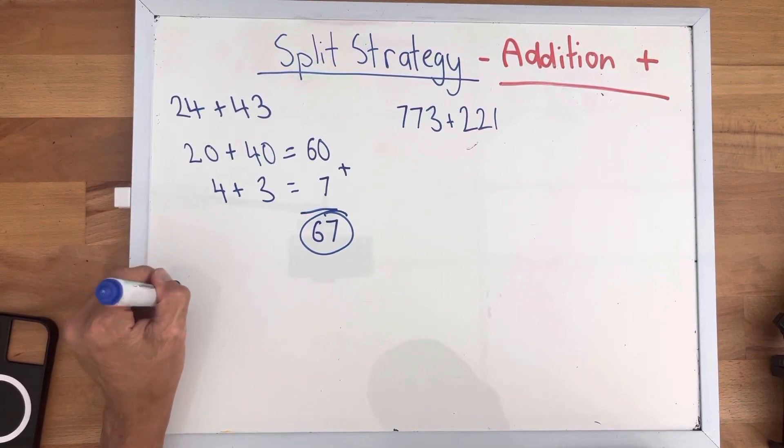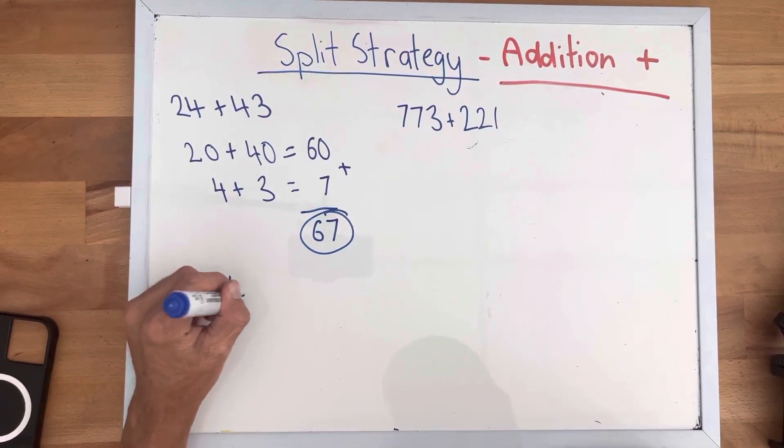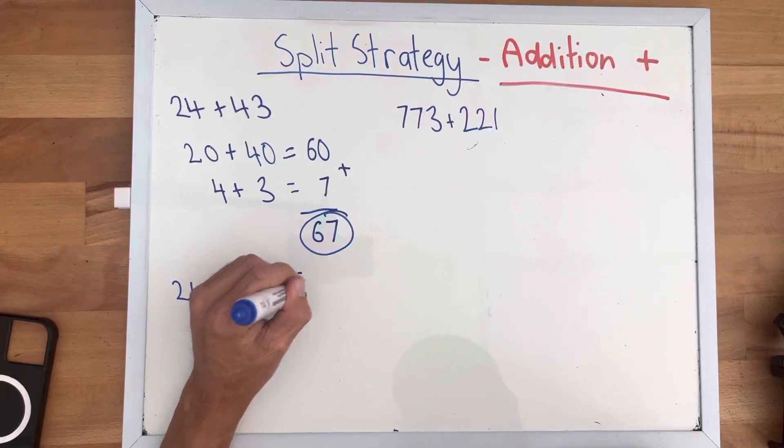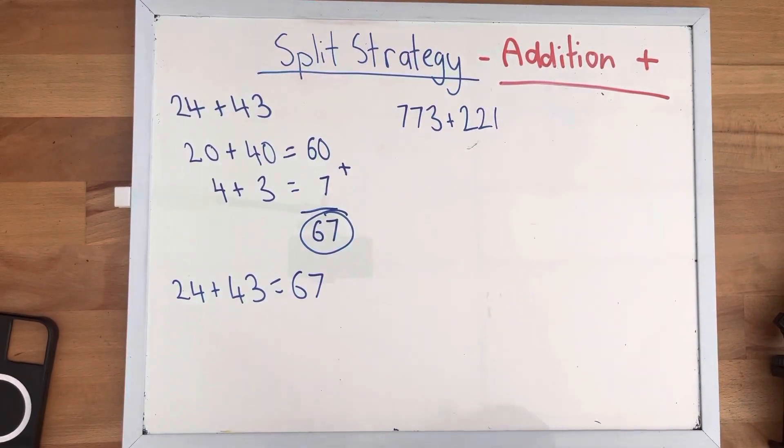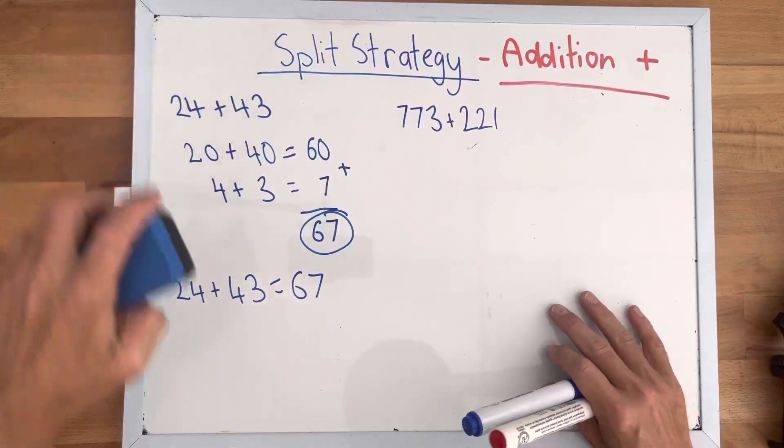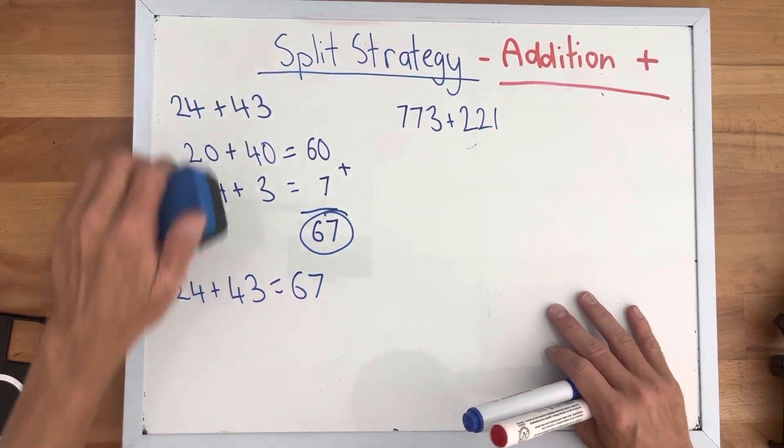And then our answer is 24 plus 43 equals 67. And that is two digit split strategy without trading.